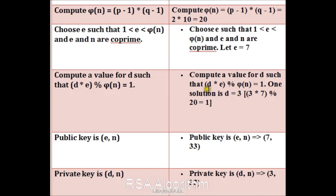In this step, we will calculate the value of D whose product with E, modulo φN, must be 1. In my example, E is equal to 7 and φN is equal to 20. Therefore, I will take the value of D equal to 3, because 3 into 7 is equal to 21, and 21 modulo by 20 is equal to 1. Then we will decide the public key: E comma N, that means E equal to 7 and N equal to 33. Similarly, the private key is D comma N, where D equal to 3 and N equal to 33.